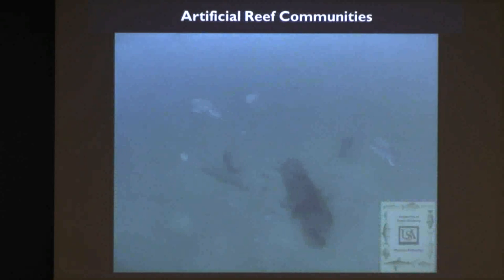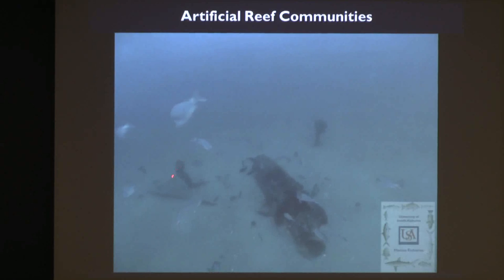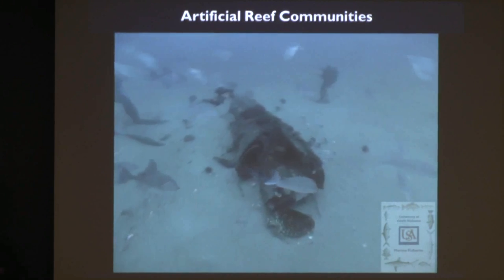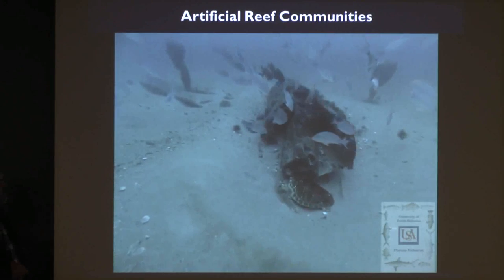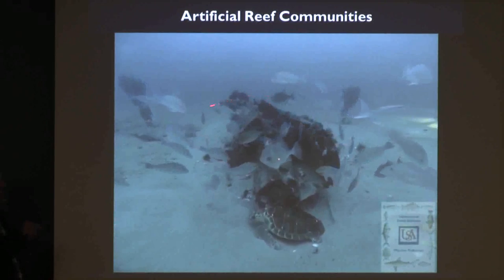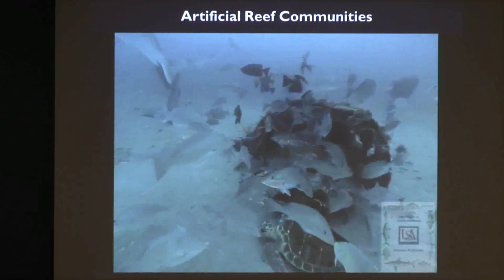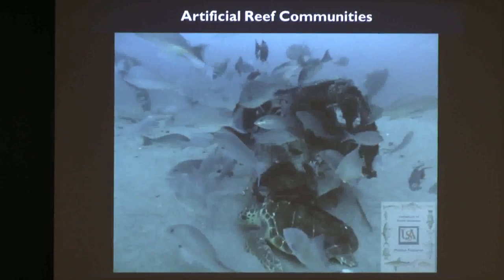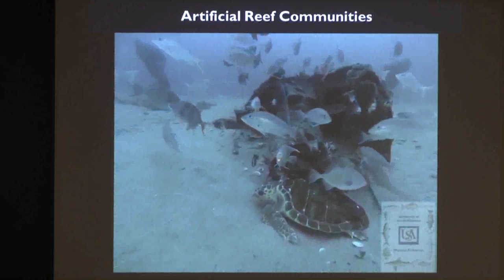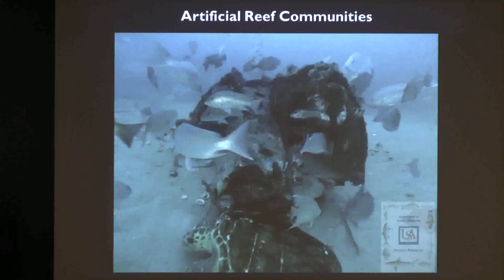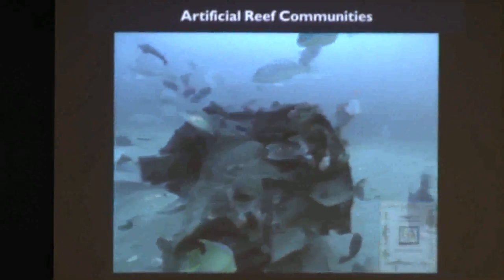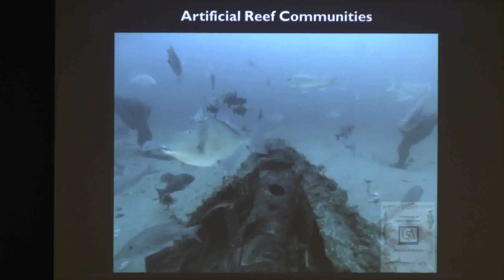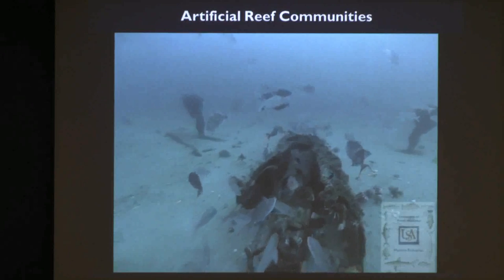A typical artificial reef looks more similar to this — this is actually the fuselage and landing gear of an aircraft, part of a wing that was purposefully sunk as an artificial reef about 15 years before this video was taken in 2012. The structure is not as complex, and we don't have many small reef fishes. There are some bigeyes in the background, but we do have large fishes like snappers — both grays and reds — some vermilion snappers, gray triggerfish, and a sea turtle. Artificial reefs function mostly as fishing gear in our region.